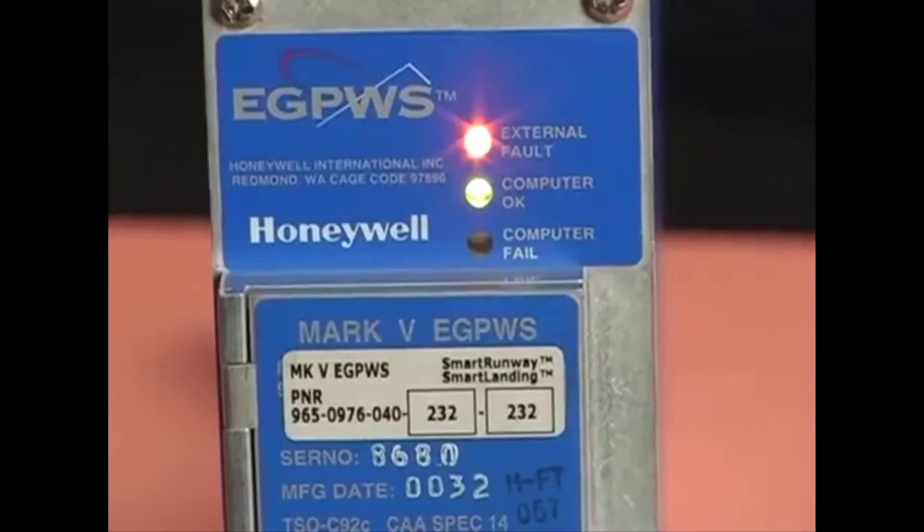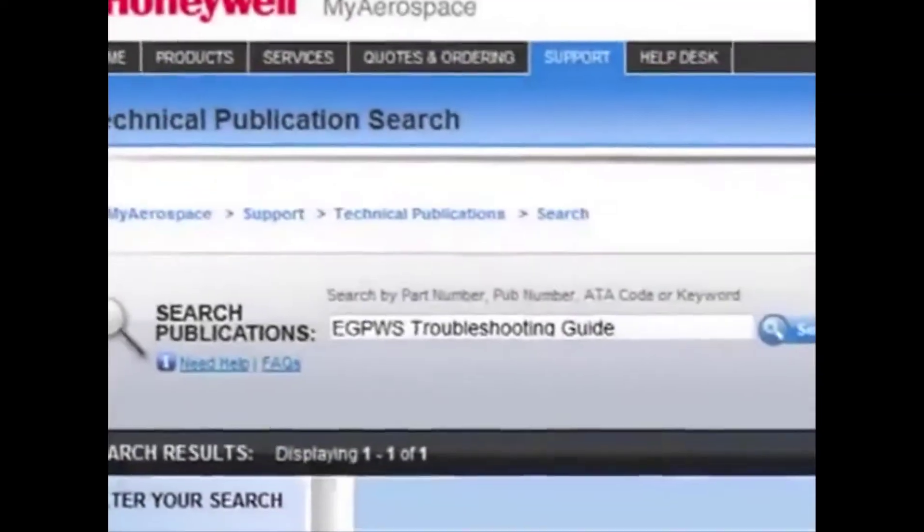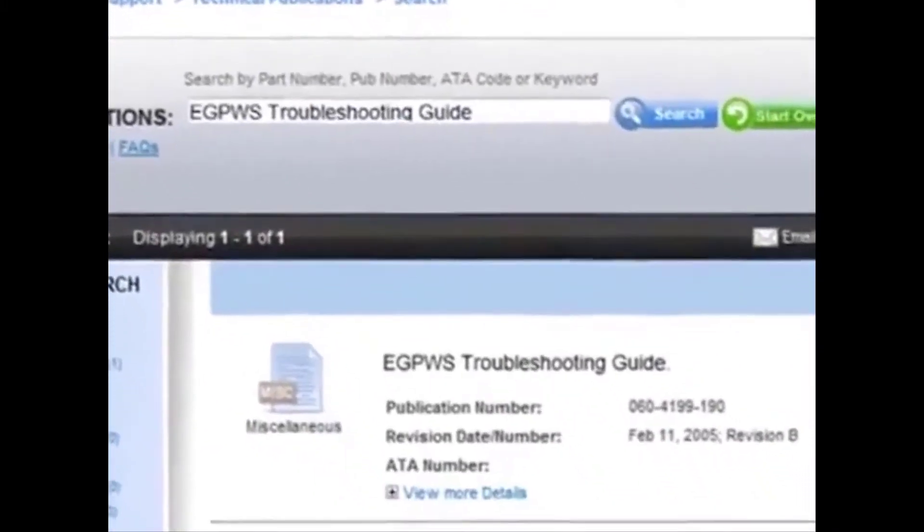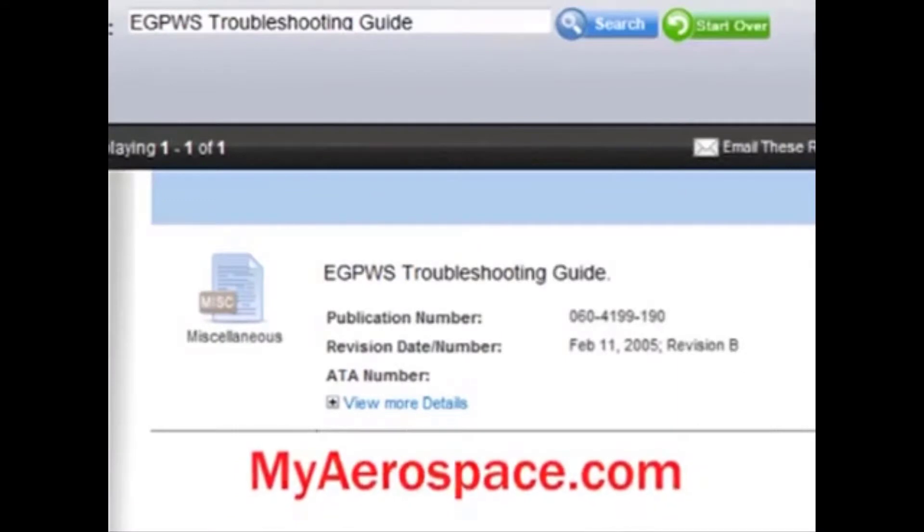So, to help you troubleshoot problems, the eGPWC has diagnostic LEDs and a comprehensive suite of self-tests. The self-tests are in the handy eGPWS troubleshooting guide. Just log on to MyAerospace.com, go to Technical Publications, and search for eGPWS troubleshooting guide.